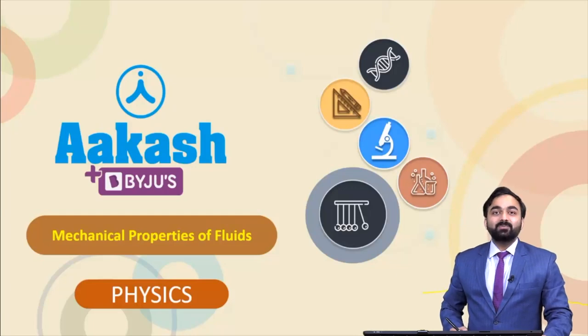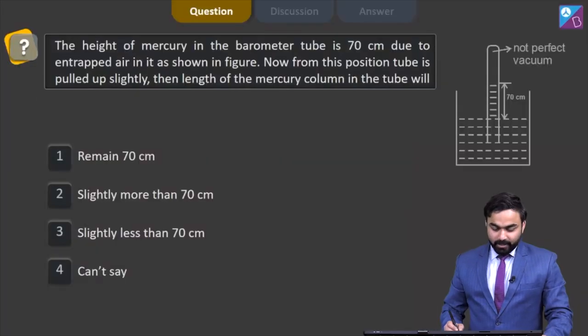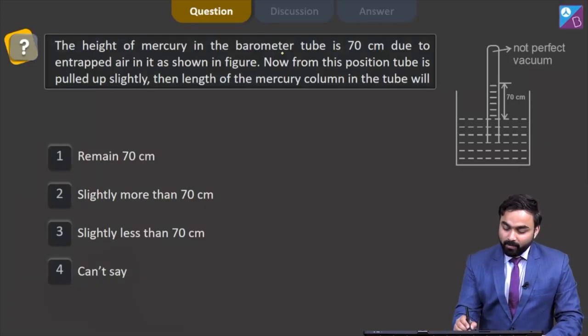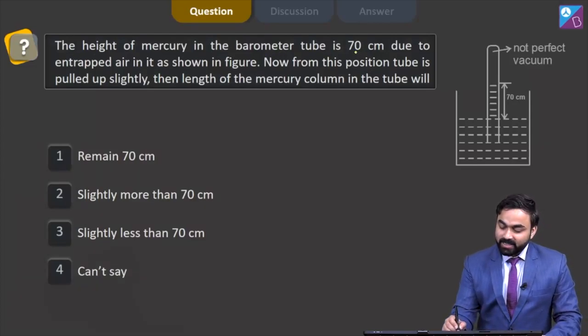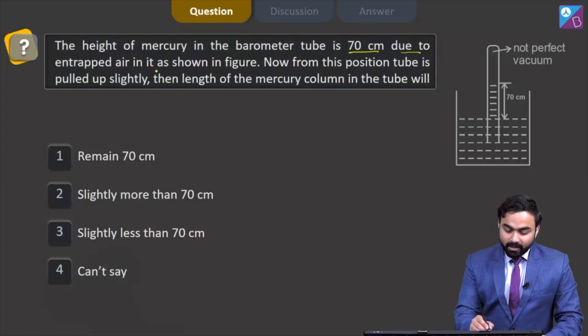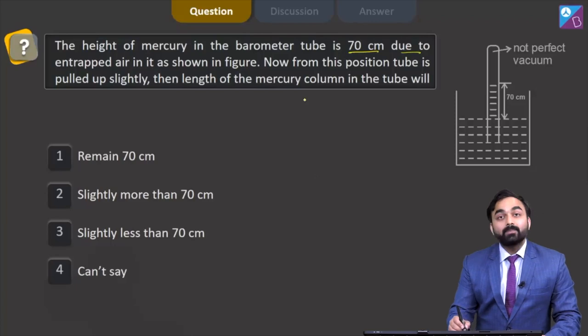Hello dear students, let us check out this particular question. In this question, the height of mercury in the barometer tube is 70 centimeter due to entrapped air in it as shown in the figure.